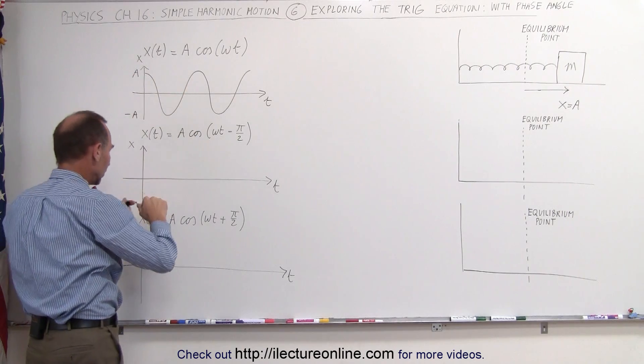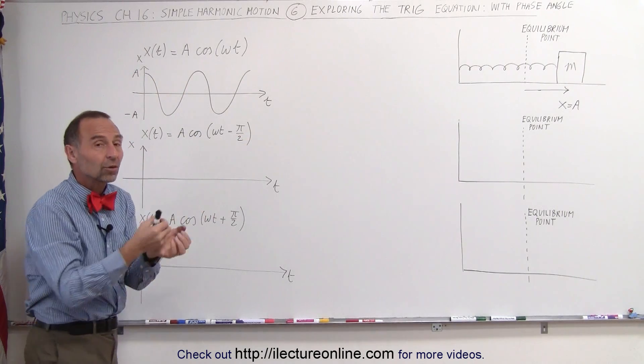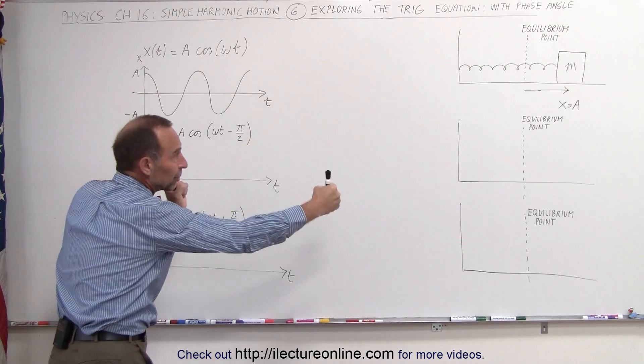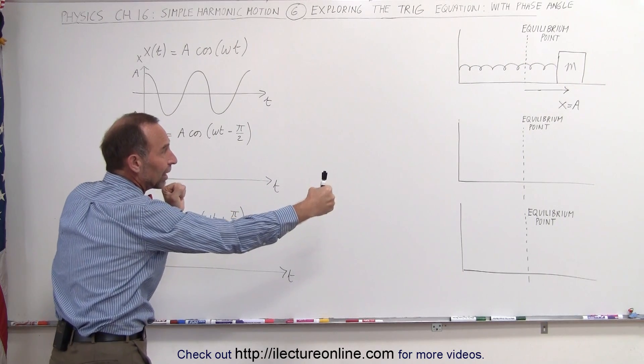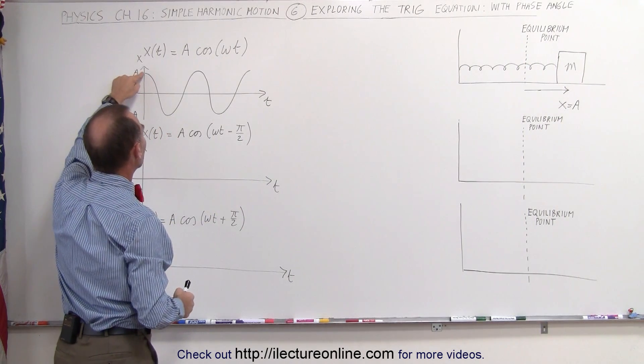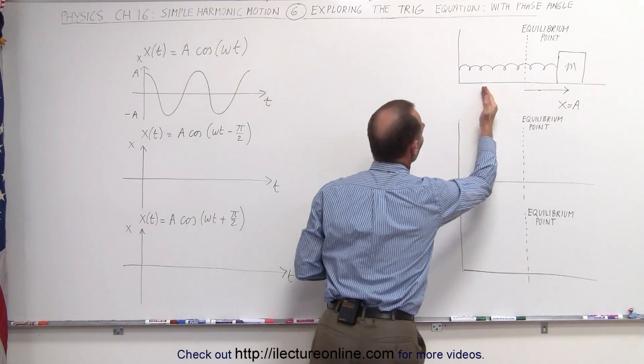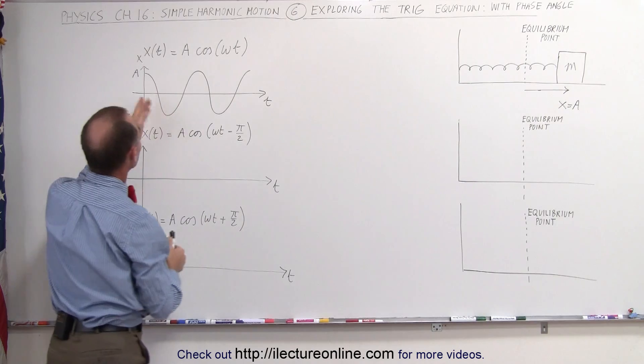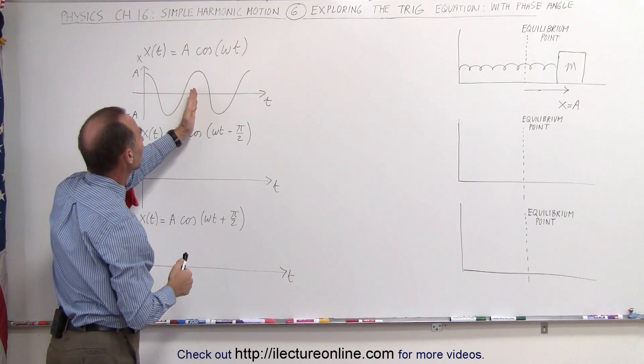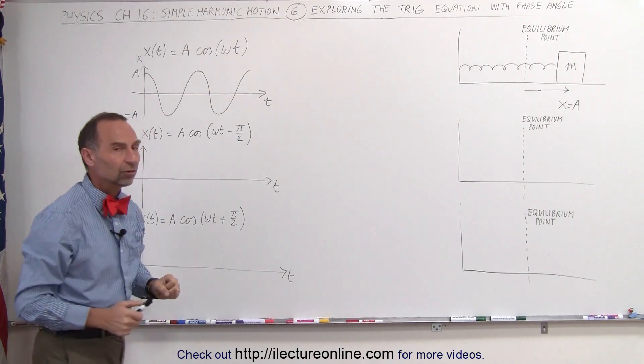So this here is represented by the situation where we pull the block out to the maximum positive displacement, x equals a, and then we let go at t equals 0. That's where the block will be. A half a period later, the block will be on the other side over here. A full period later, it's back at its original position.